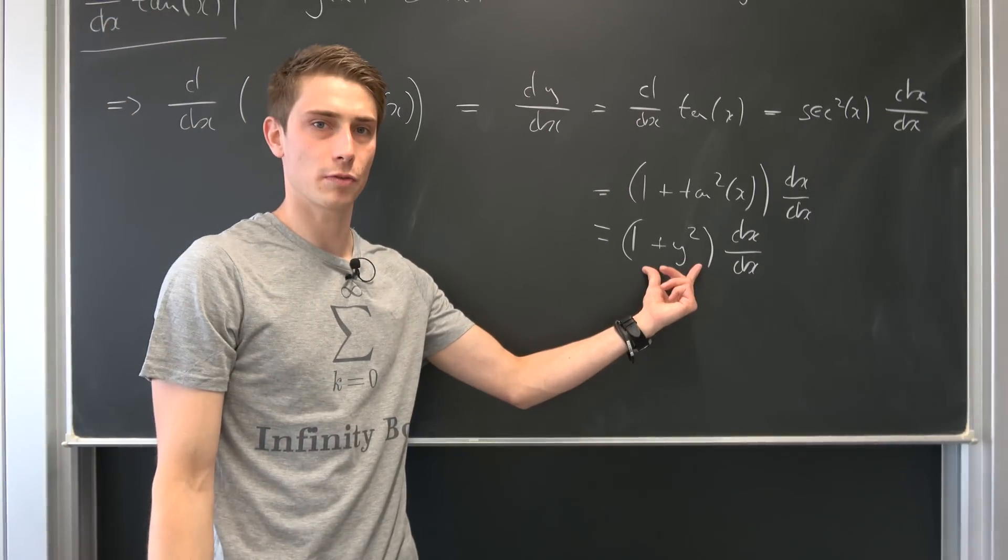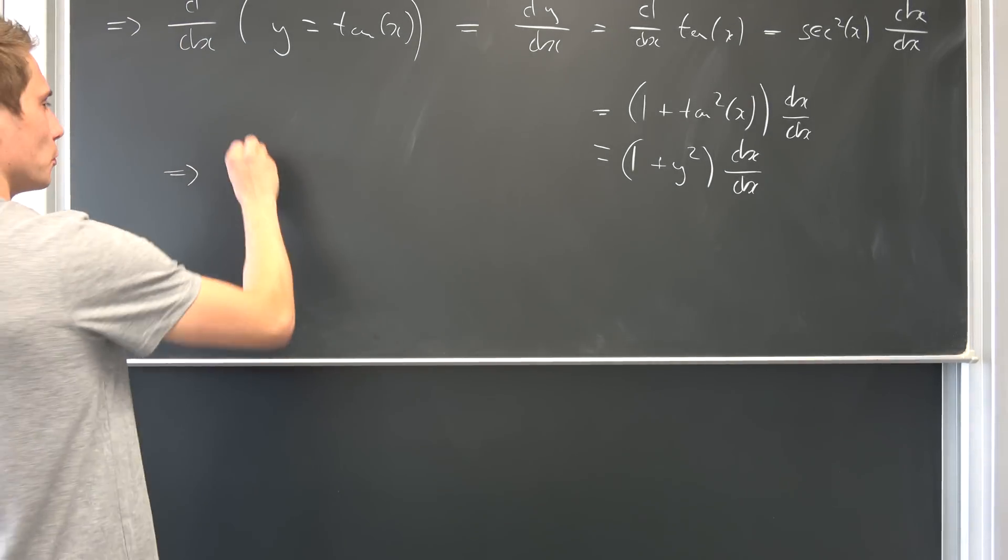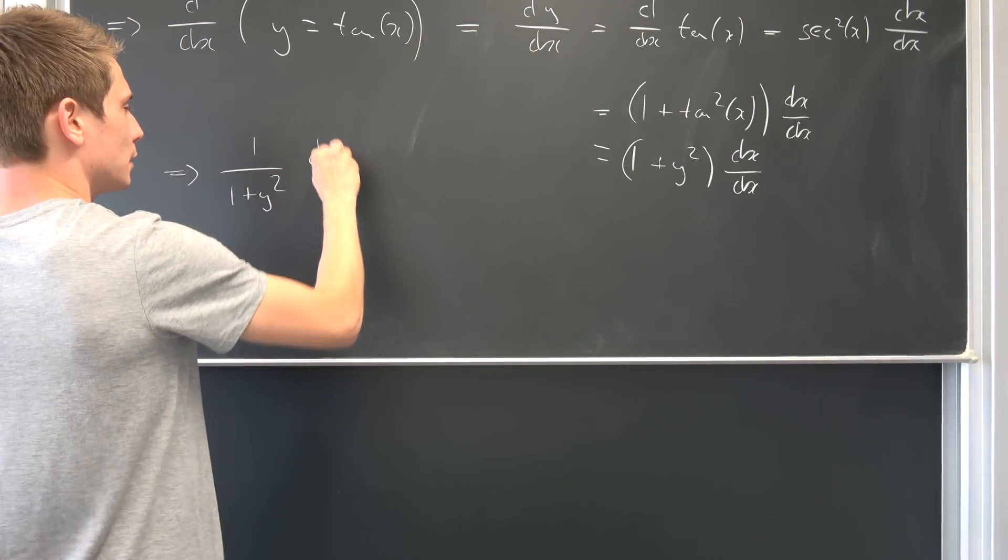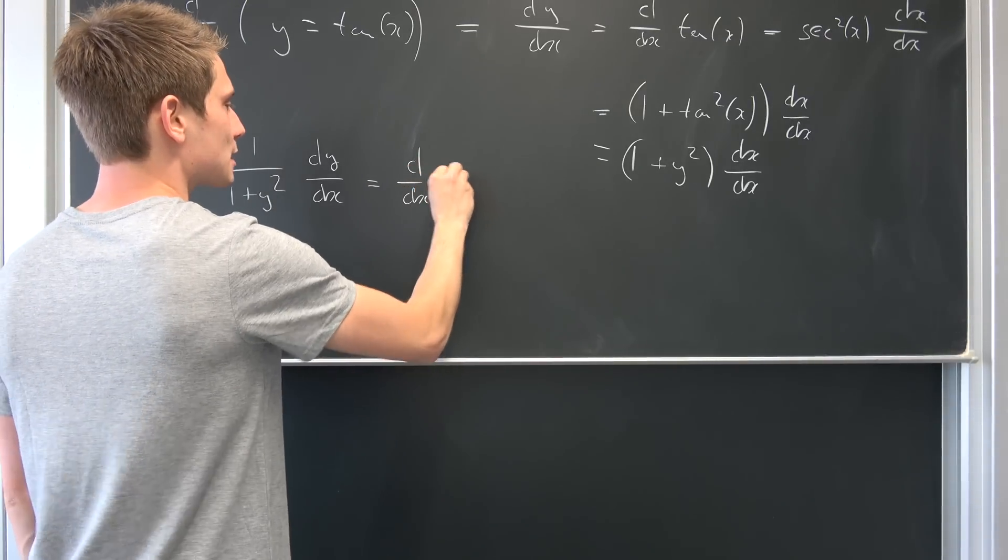And now we can just divide both sides by this thing right here. We don't want it to be equal to 0. So that means we end up with 1 over 1 plus y squared dy dx being equal to d dx of x.